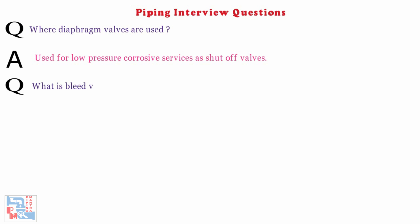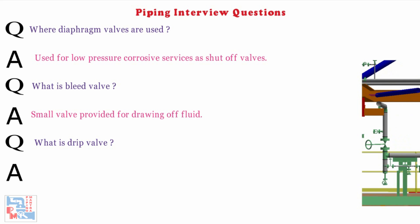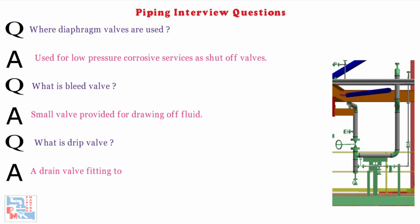Next, what is bleed valve? It is small valve provided for drawing off fluid. Next, what is drip valve? A drain valve fitting to the bottom of a drip leg to permit blow down.